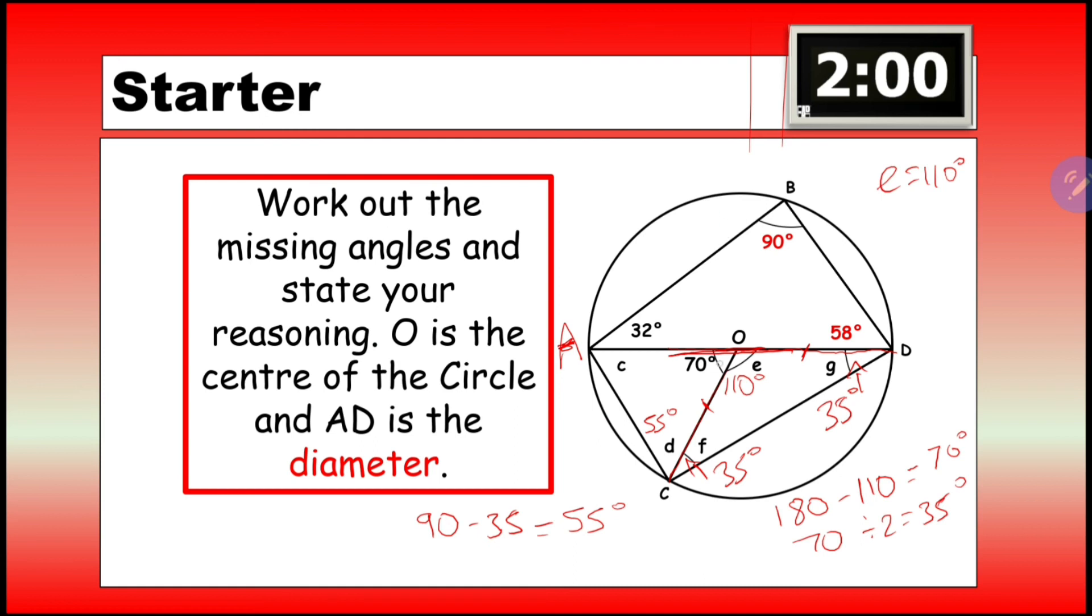And then, if we look at this triangle over here, going from O to A, that's a radius, and going from O to C is also a radius, so it's an isosceles triangle, meaning C should be 55 degrees.